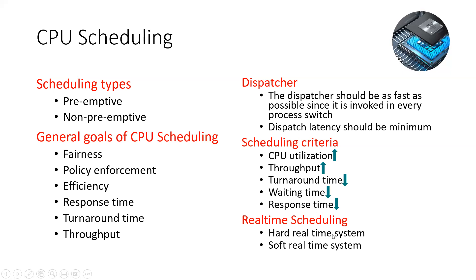Hard real-time scheduling has strictly defined rules — for example, first come first served means the first process gets full execution while other processes wait. Soft real-time scheduling has more flexible priority-based rules, such as shorter job first. We differentiate between the soft real-time system and the hard real-time system.